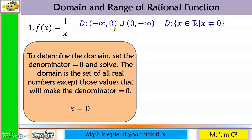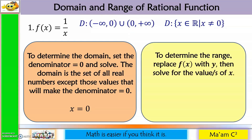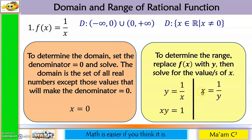This means only 0 is not included in our domain, which is why we use parentheses. For the range, replace f(x) with y, then solve for x. So we have y = 1/x. Applying cross multiplication gives xy = 1, and dividing both sides by y gives x = 1/y. Now we have a denominator in y.